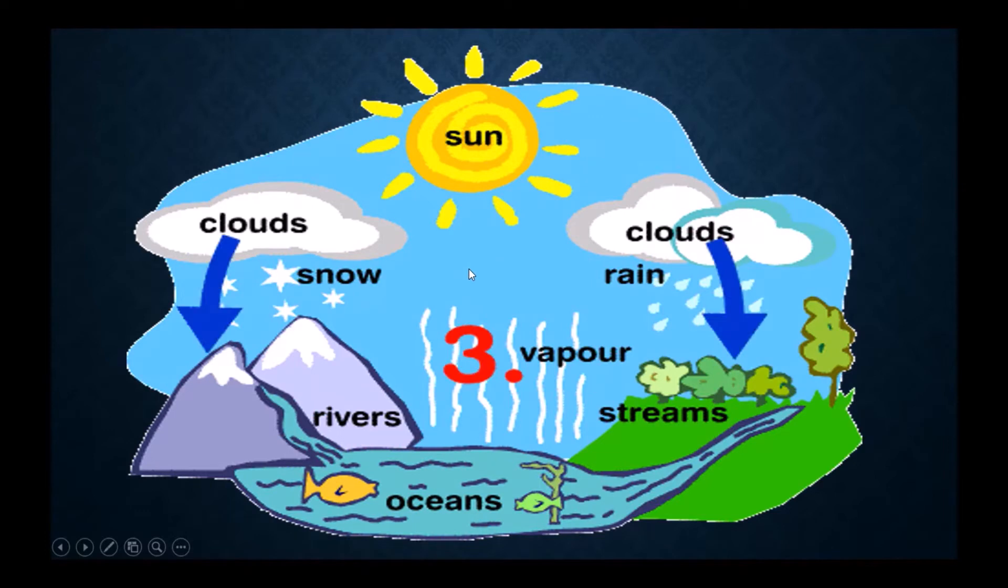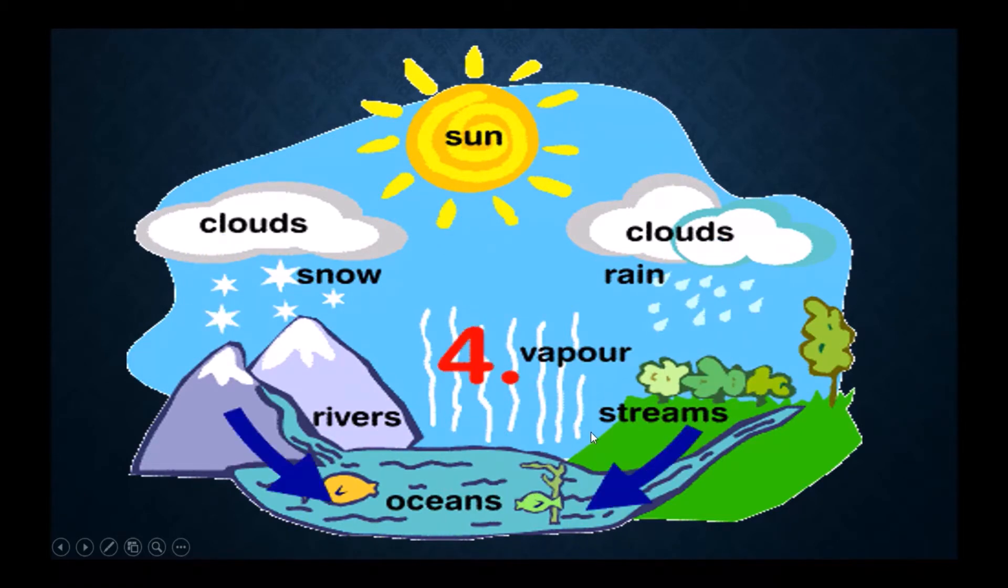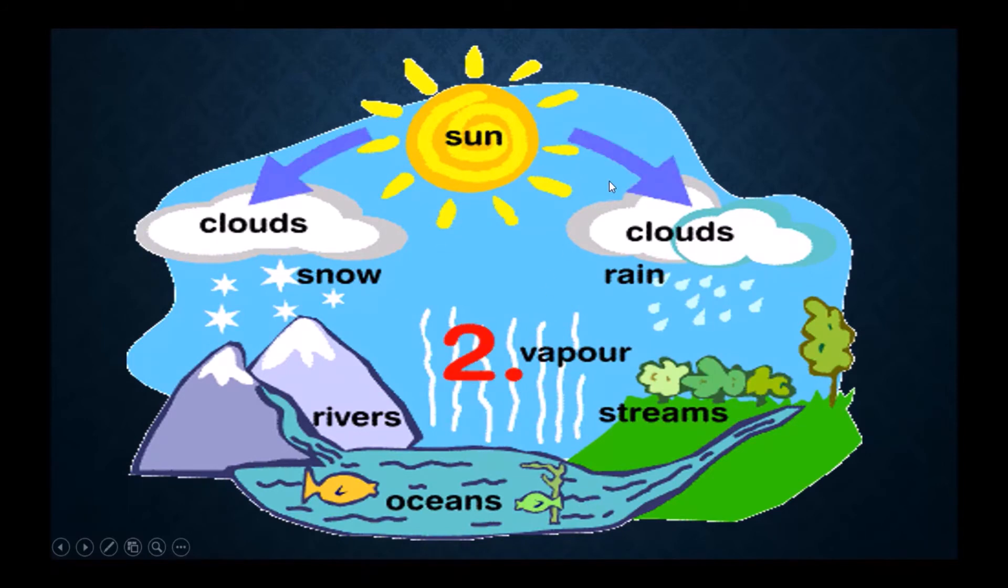So this is the full process of water cycle. First the sun, second clouds, then third oceans, water comes in oceans, then again it becomes water vapors. This is the full process of water cycle which is continuous.